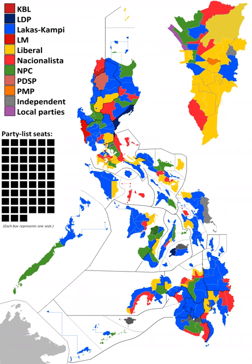In the graphical representation of results, the top bar represents seats won while the bottom denotes the proportion of votes received. One party won 3 seats while 11 parties won 2 seats each; 31 parties won 1 seat each; and 135 parties did not win a seat.